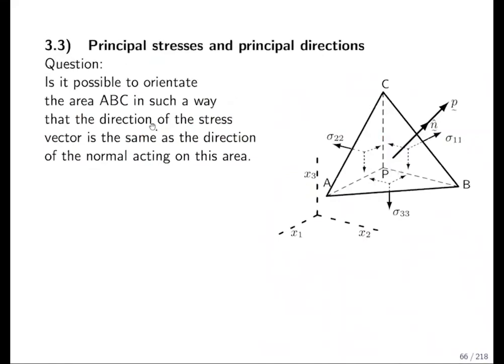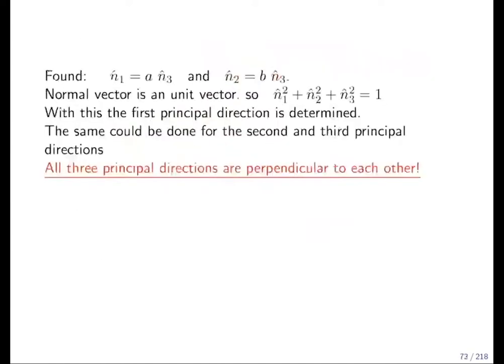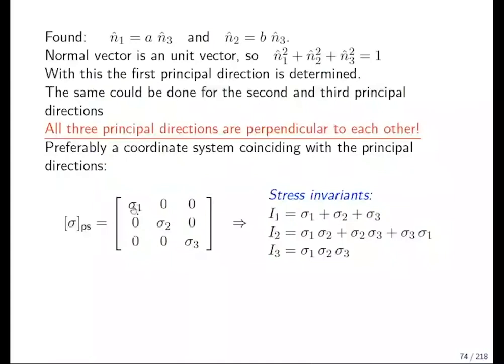Remember the question with which this section started. Is it possible to orientate the area ABC such that the direction of stress vector and normal vector is parallel? I told you this means that there are no diagonal stresses. Sigma 1, sigma 1 component is the normal stress. Sigma 1, sigma 1 component is the shear stress on phase 1, but there is no shear stress so it must be 0. There is no shear stress in the 3 direction, in the z direction also, must be 0.